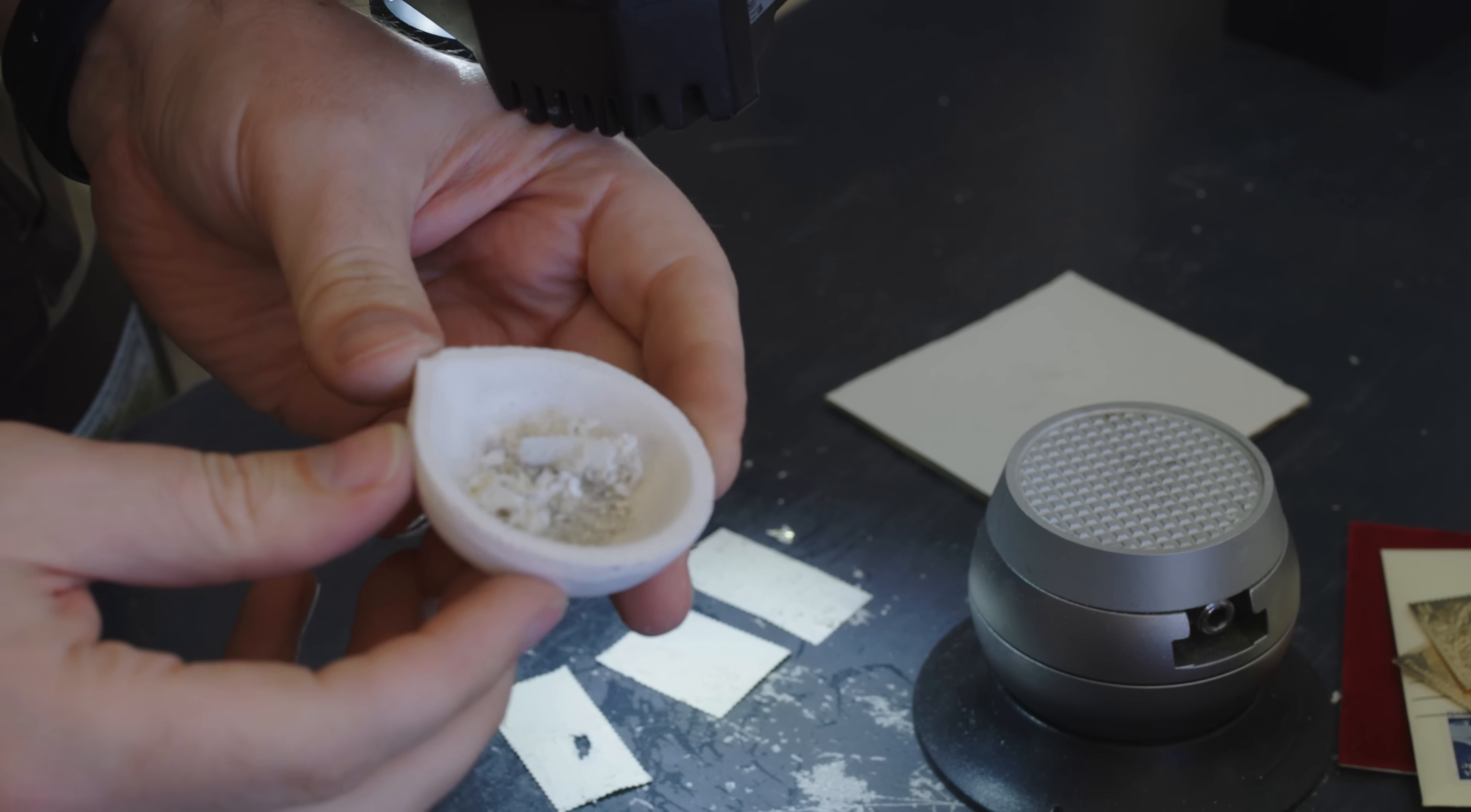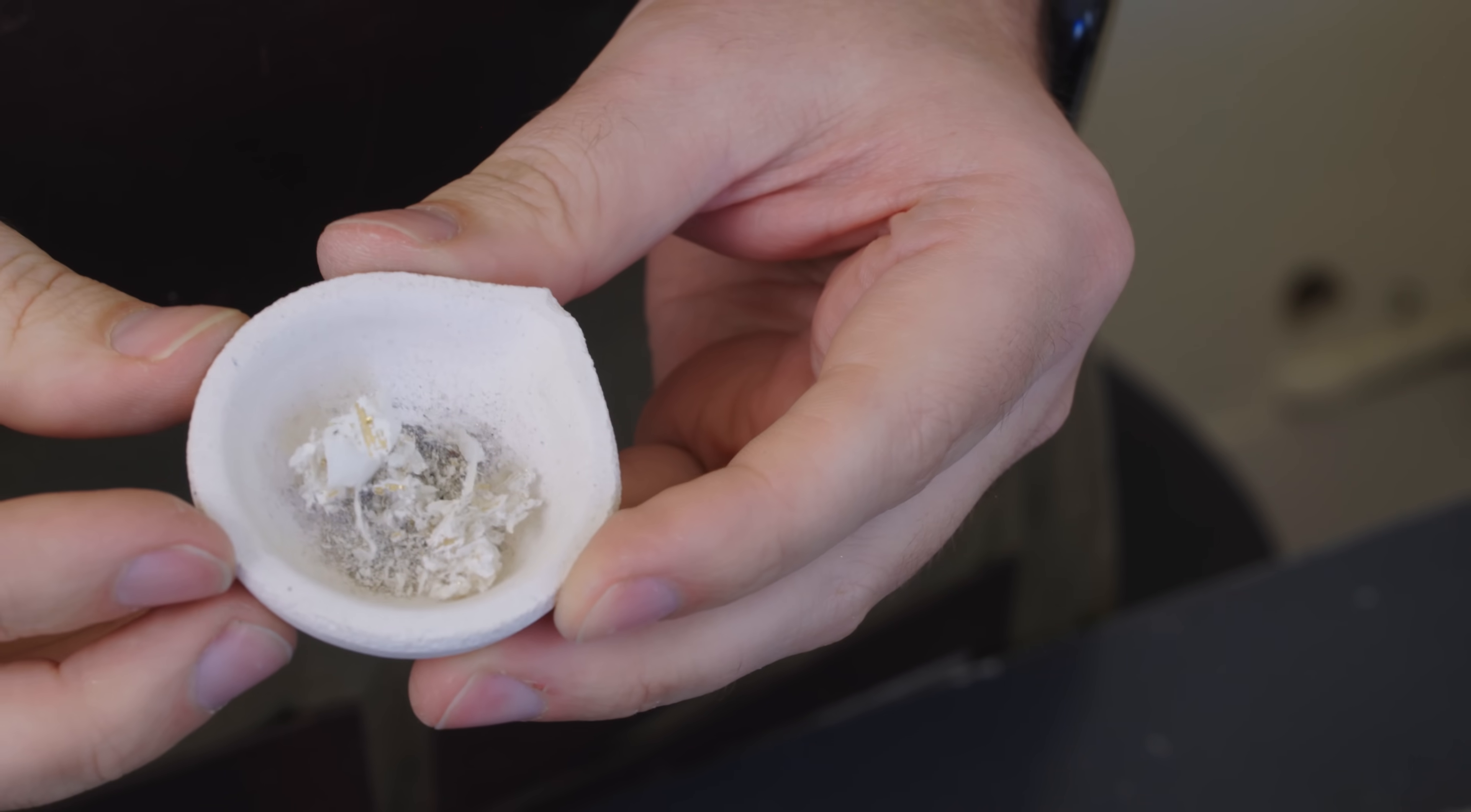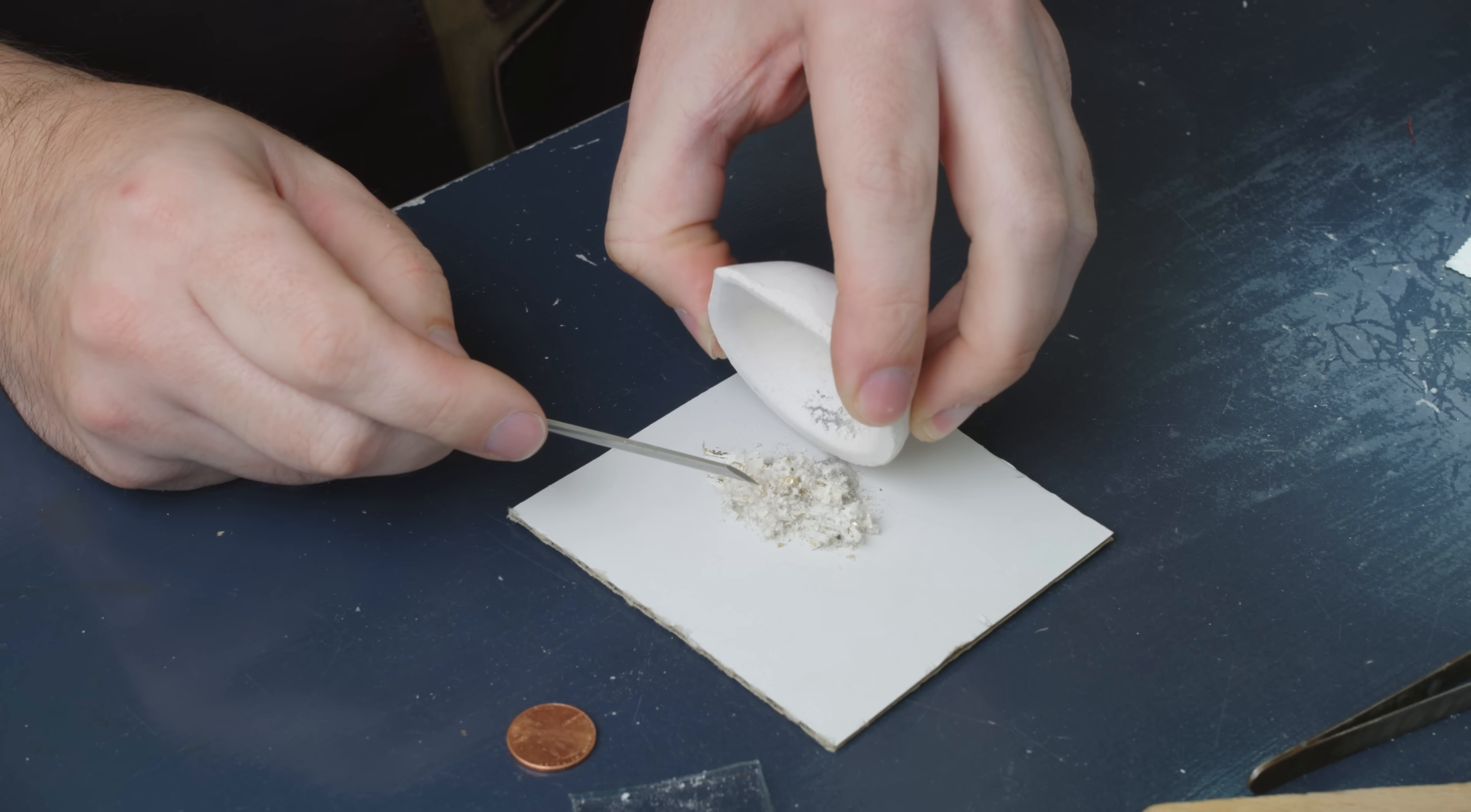Before I melt it down, I actually want to glaze this baby crucible because I've never used it before. And the thing about these crucibles is that if they don't have some sort of protective coating on them, the crucible itself will want to absorb what you're melting down or whatever you're melting down will simply stick to it. And it becomes really hard to get any sort of good melt going. So I'm going to dump out the little gold specks and the paper.